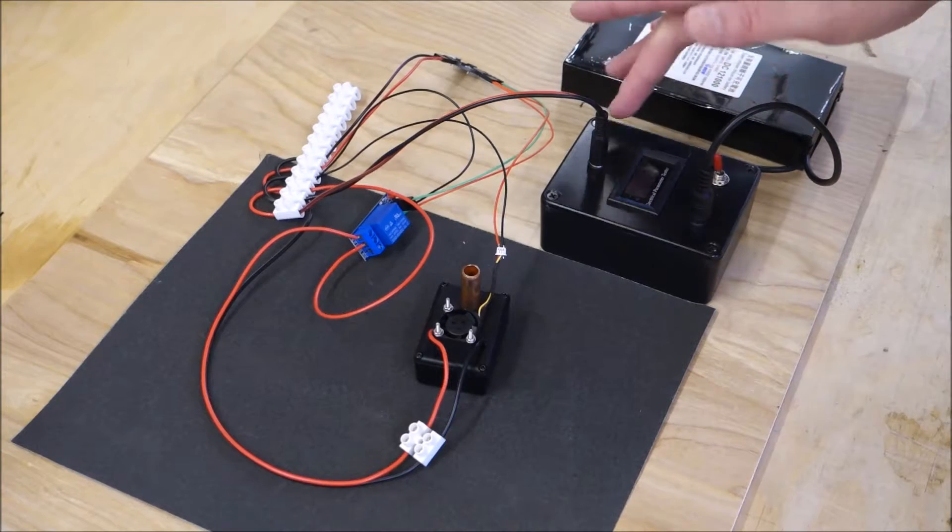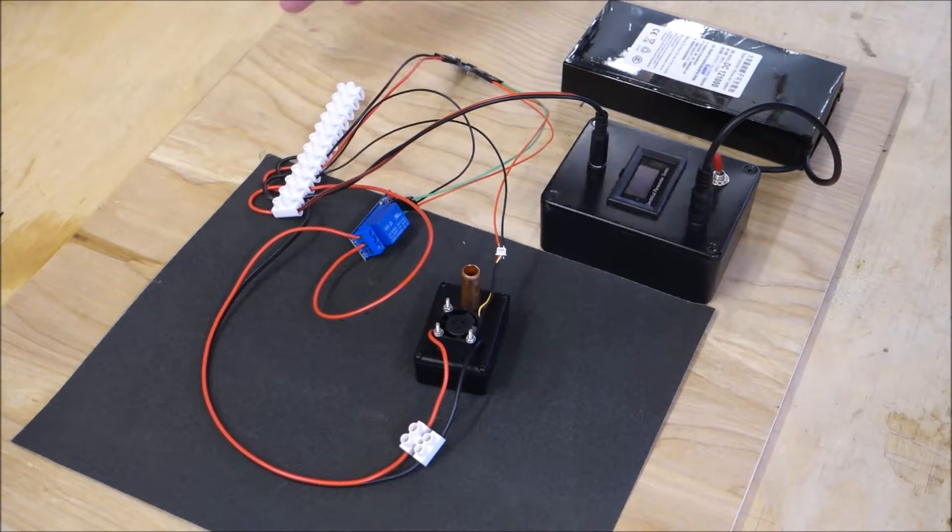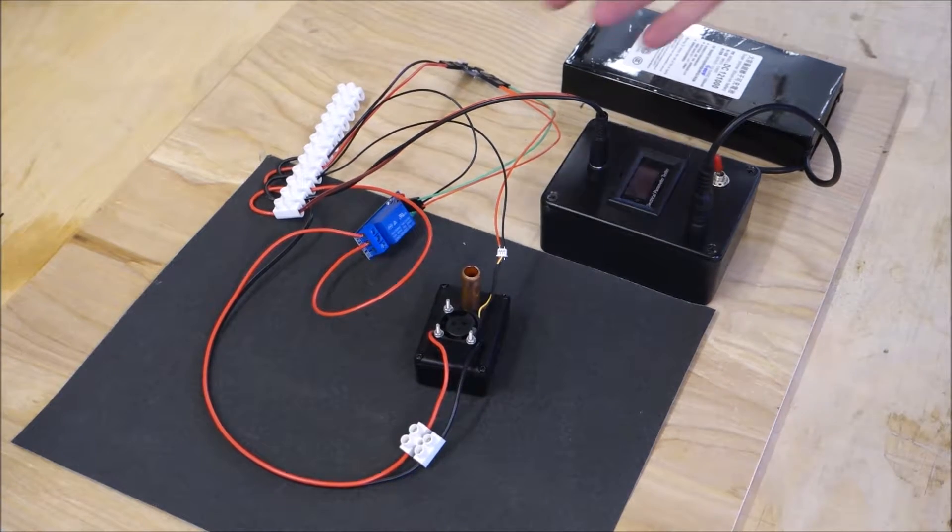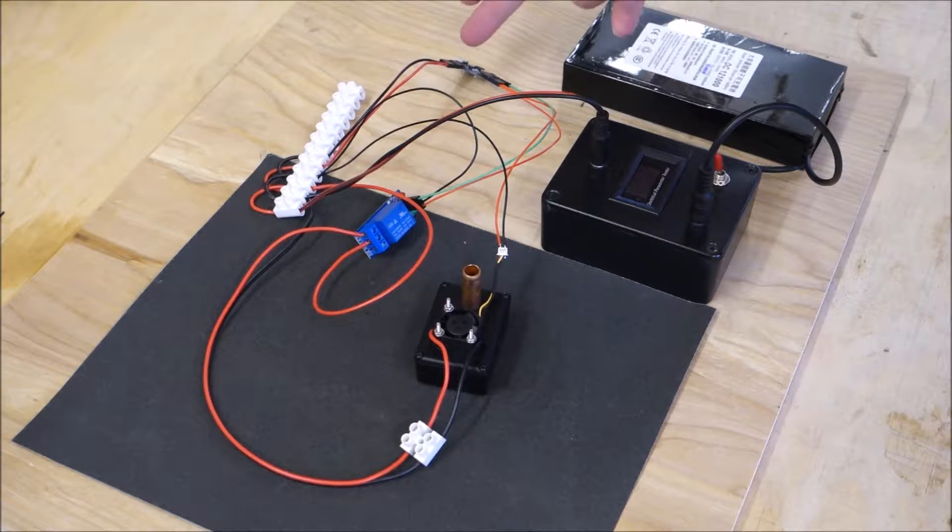And from there, the power is going into this rail, and the rail is then providing power to the various different components. So we have a live on earth going to the Digi Spark.